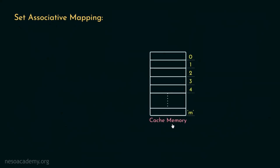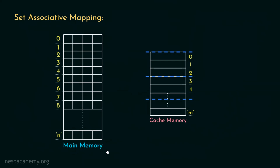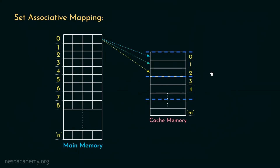In this concept, the lines of the cache memory are subdivided into sets. Therefore, any main memory block that is mapped onto a cache line gains the flexibility of being mapped onto any of the lines belonging to that specific set. For instance, suppose block number 0 of the main memory is mapped to cache line number 0. This 0th line belongs to a particular set, so main memory block number 0 has more than one mapping option — apart from line number 0, it can also be mapped onto either line number 1 or 2, that is, any of the cache lines belonging to that set.